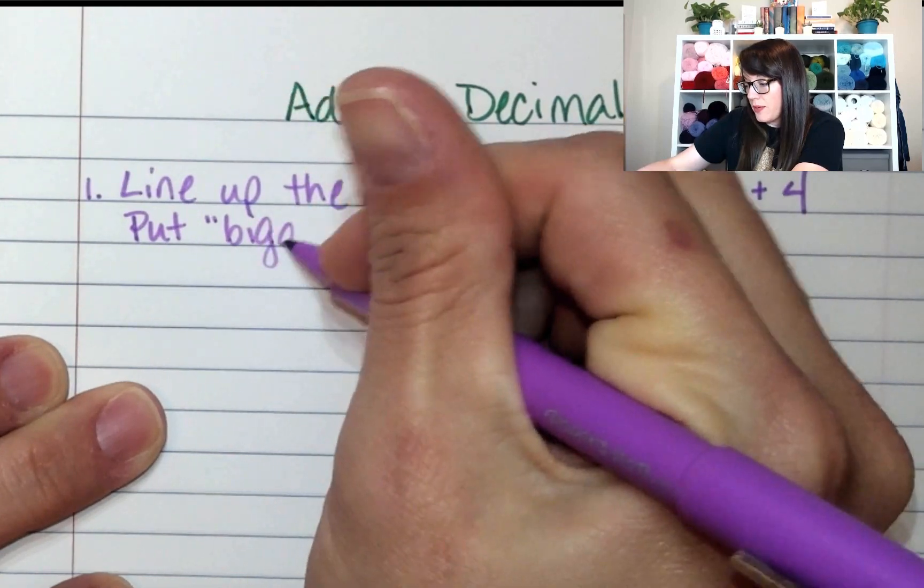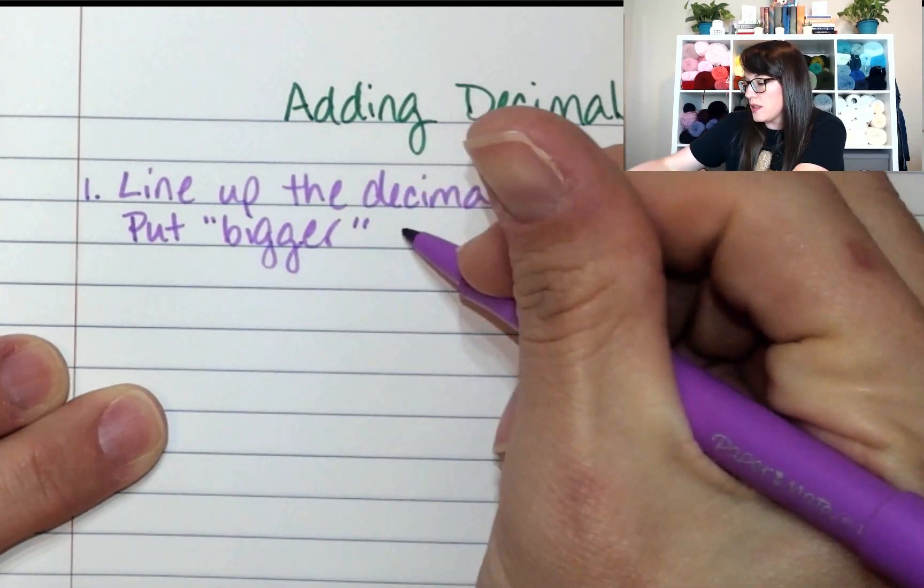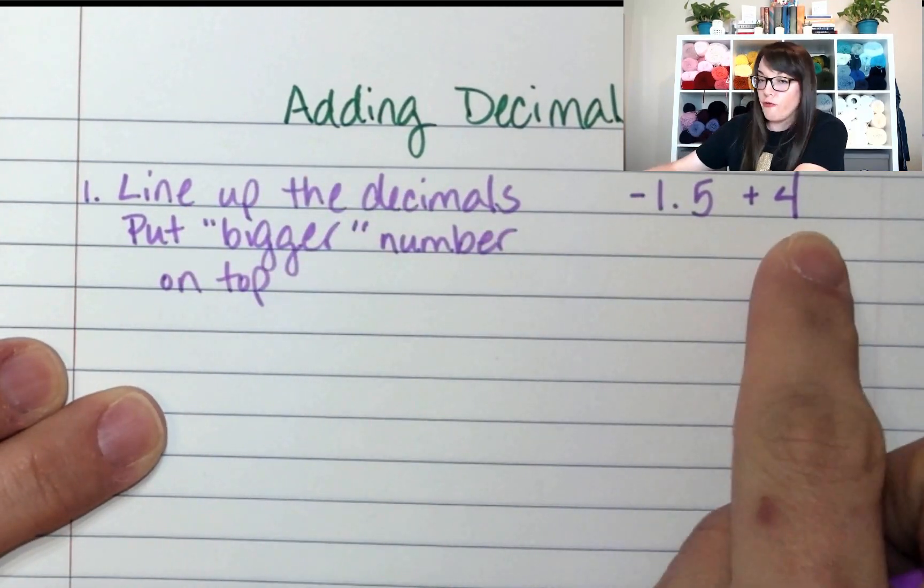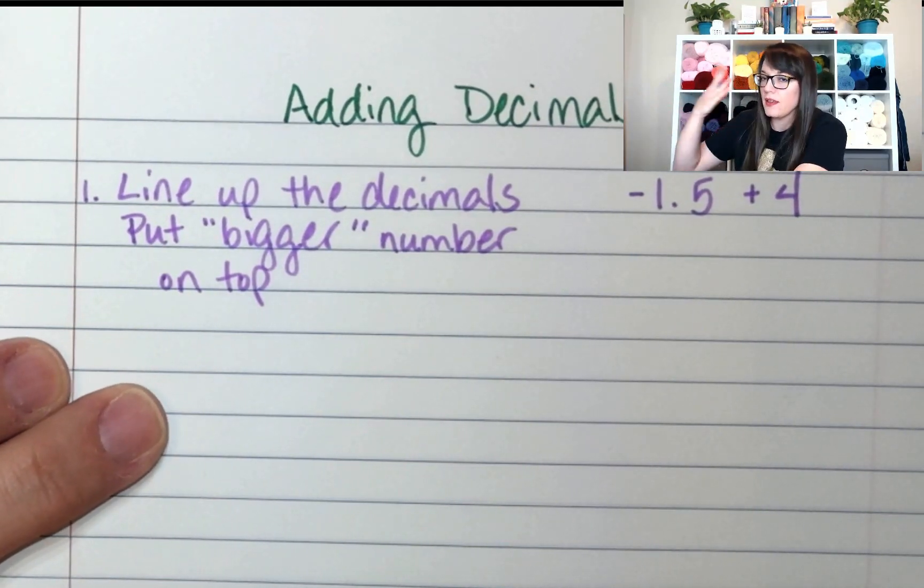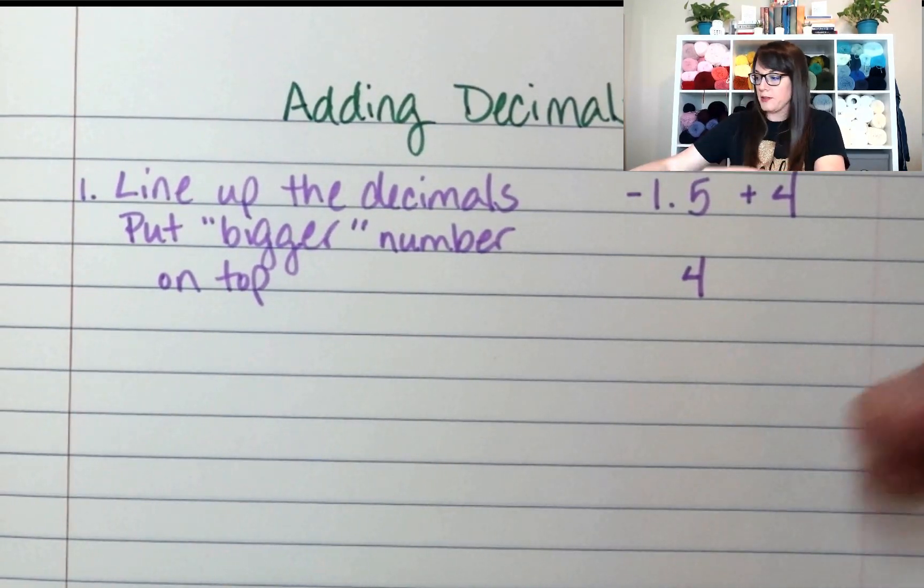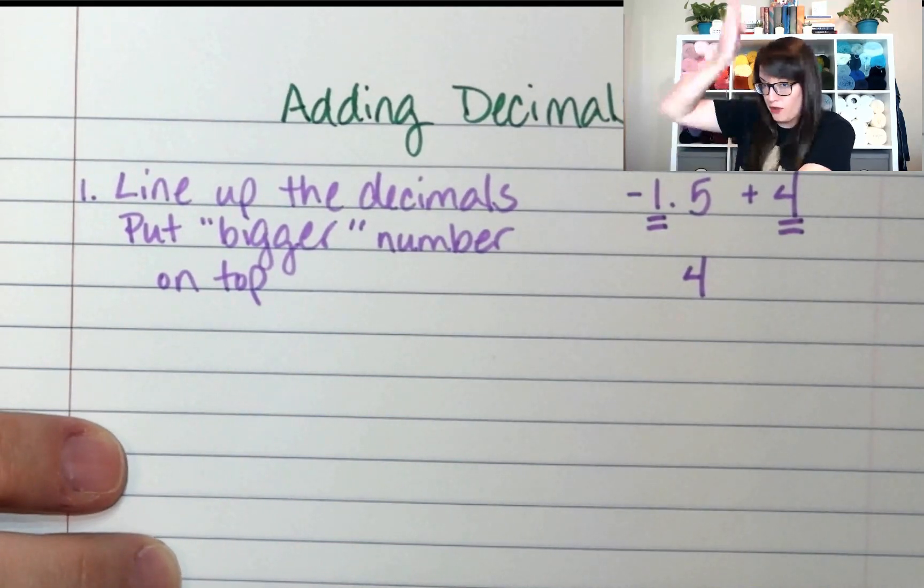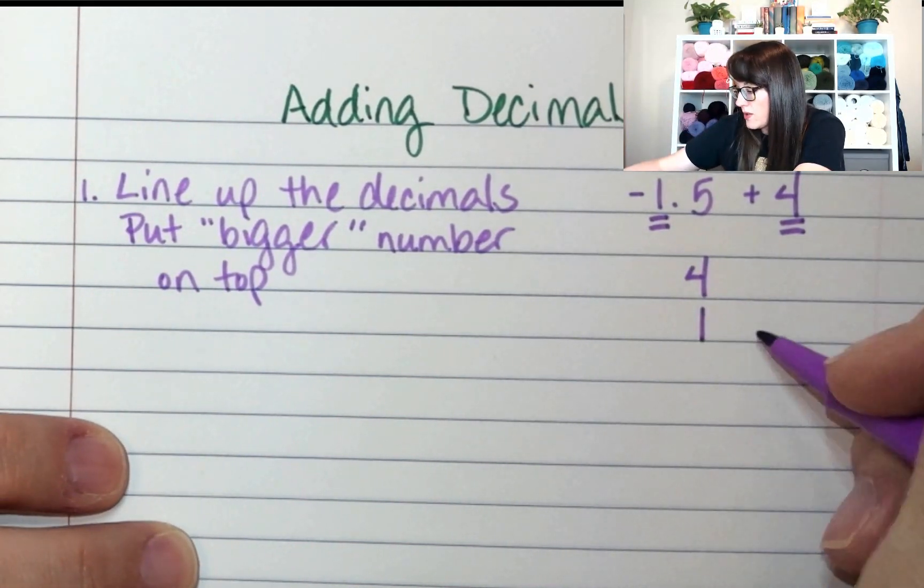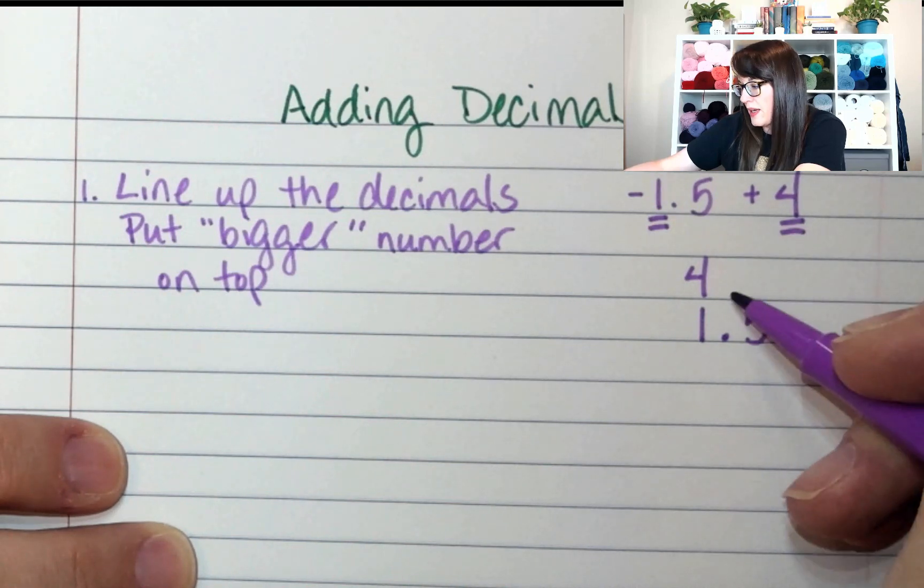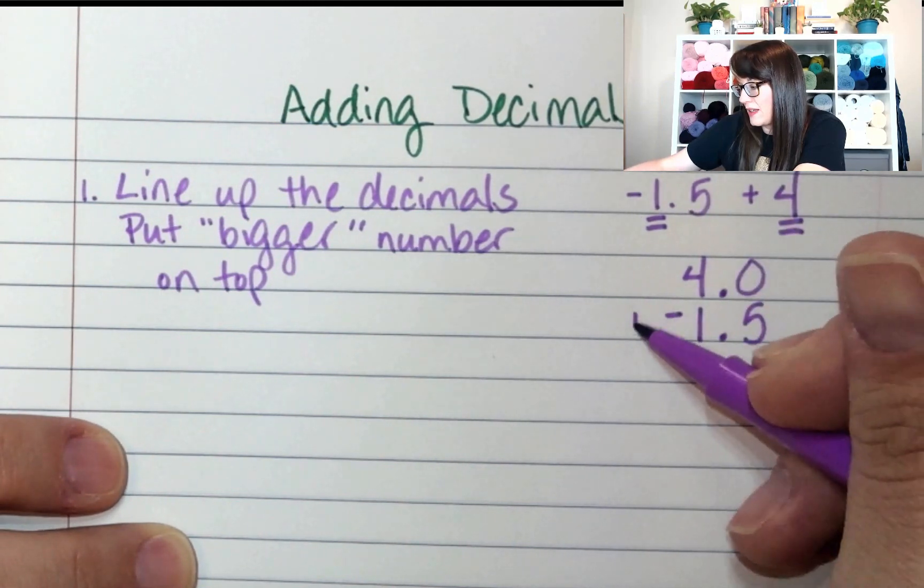So I want to put my bigger number on top. I'm going to put bigger in quotation marks because it's not actual. The 4 is in the ones place, so underneath that, I want to line it up with the ones place here. The 1 goes here and then 0.5. To fill in this space, I'm going to add a decimal and a 0 so that they balance. This was a negative and I'm adding these two numbers together.